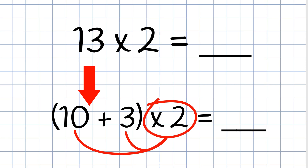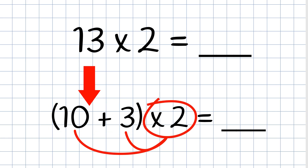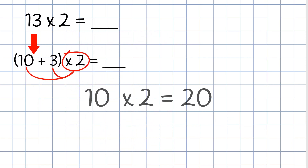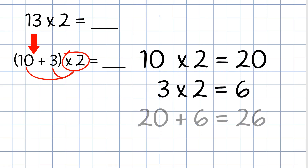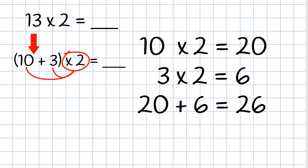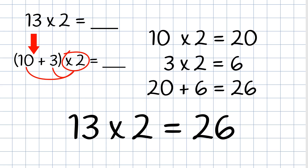Now I get it! We will distribute the other factor, which is 2, to the values of our first factor. After we get each product, we need to add them together. If 10 times 2 is 20, and 3 times 2 is equal to 6, then 20 plus 6 is equal to 26. Therefore, 13 times 2 is equal to 26.